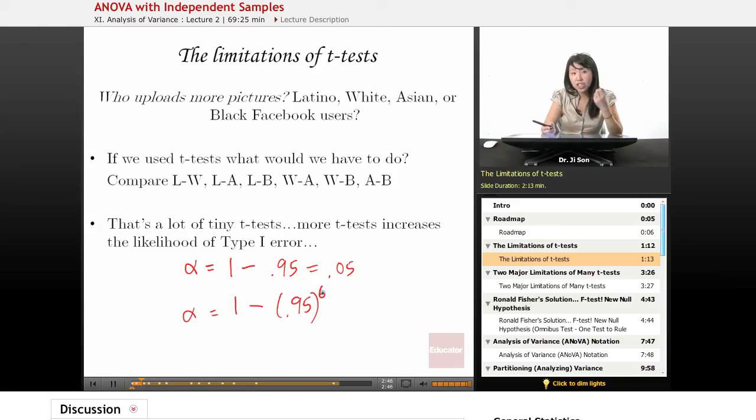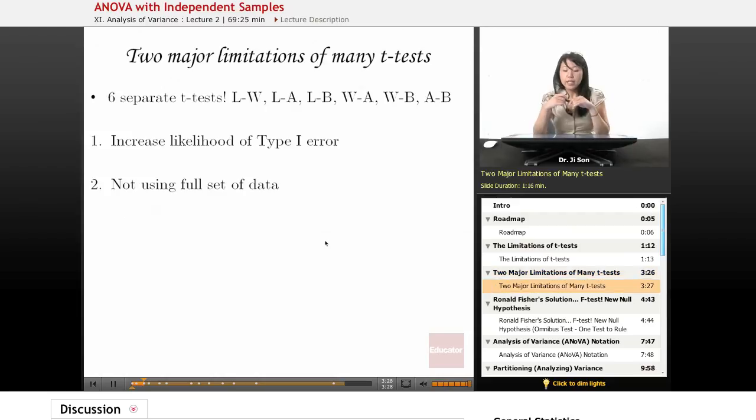And that's going to be a much higher Type I error rate than you really want. So the problem is that the more t-tests you have, the bigger the chance of Type I error. Even non-mathematically, you could think about this: every time you do a t-test, you could reject the null. Every time you reject the null, you have a possibility of making a Type I error. So if you reject the null six times, then you have increased your Type I error rate because you're just rejecting more null hypotheses.